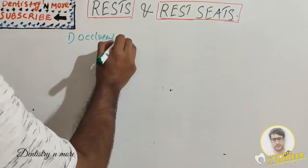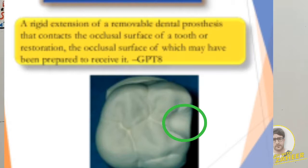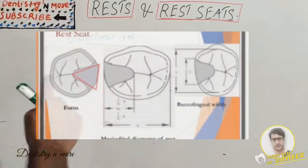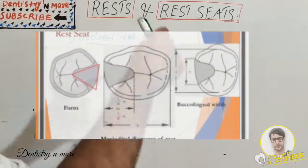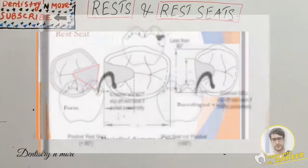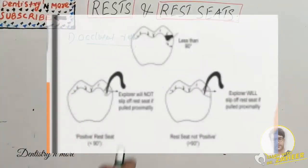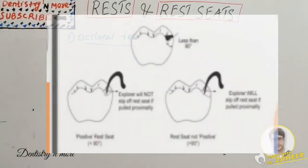The occlusal rest is a rigid extension of a removable dental prosthesis that contacts the occlusal surface of a tooth or restoration. Its form is triangular, where the base is at the marginal ridge and the apex is toward the center. The mesiodistal diameter of the rest is one-third to one-half of the mesiodistal diameter of the tooth, and the buccolingual dimension should be one-half of the total buccolingual width. The angle formed by the occlusal rest and the vertical minor connector should be less than 90 degrees.